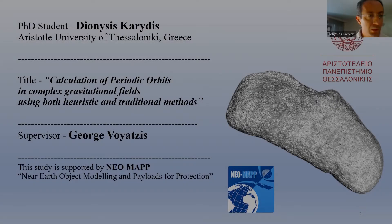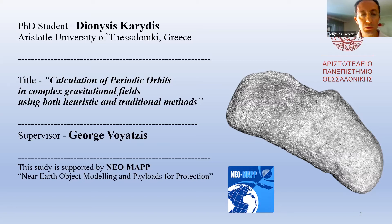Hello, my name is Dionysio Karidis. I am a PhD student at the Aristotle University of Thessaloniki, Greece. My PhD thesis is about the calculation of periodic orbits in complex gravitational fields using both heuristic and traditional methods.